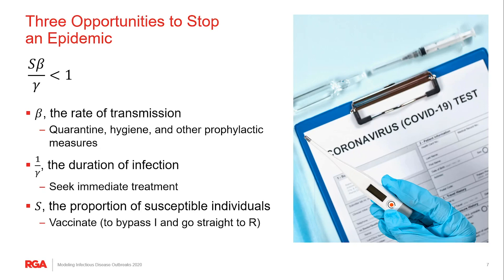So quarantine would lower the number of actual interactions that take place. And then prophylactic measures such as hand washing, disinfectants, face masks, and things like that could lower the chances that any encounter actually results in a transmission.